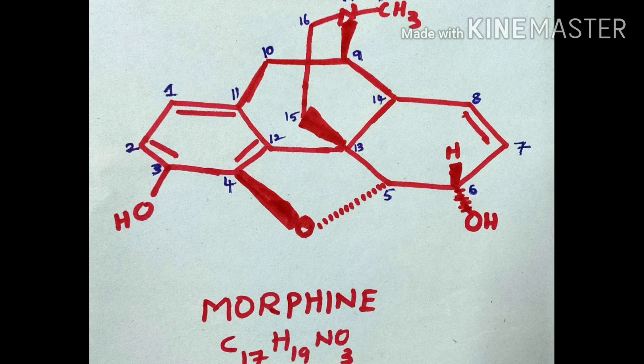Morphine formula is C17H19NO3. Morphine has 5 chiral carbon atoms in it, so on the whole we should have 32 optical isomers with these 5 chiral carbons. Out of these 32 possible structures, we have to find out the original structure for morphine.